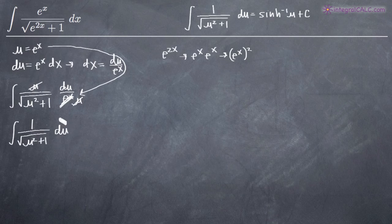And what's great about this is that we've now gotten to a point where our integral currently matches the formula that we have up here. This formula tells us that the integral of 1 over the square root of u squared plus 1 is equal to the inverse hyperbolic sine function of u plus c.